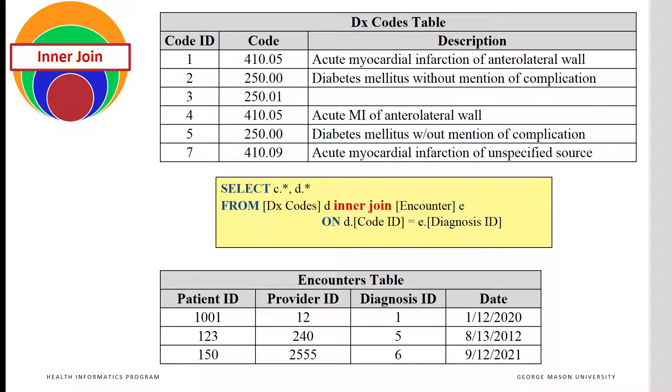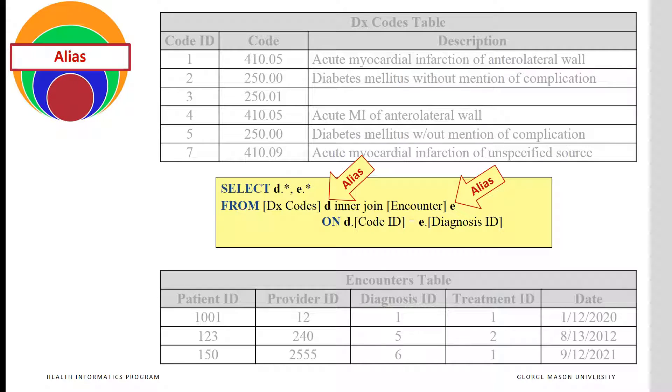This is an example of the code that can join these two tables. Since table names are often long, to reduce the need to repeat the names of the table as a prefix for each field, one can also introduce aliases in join statements. In this statement, letters D and E are two aliases for the diagnosis codes and the encounter tables.